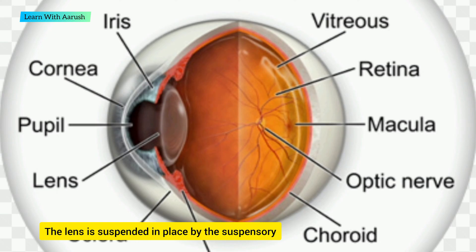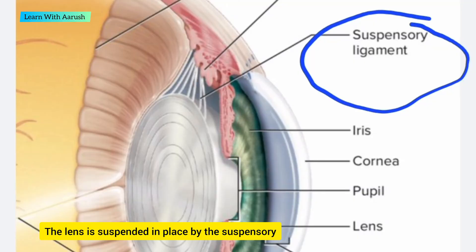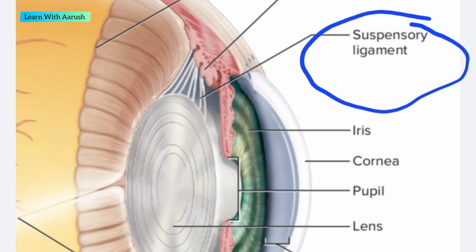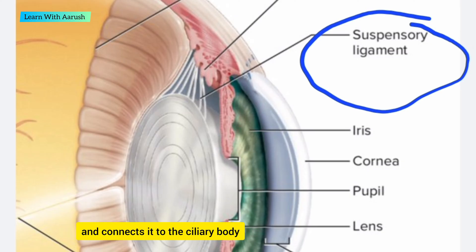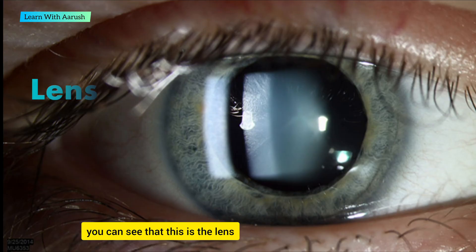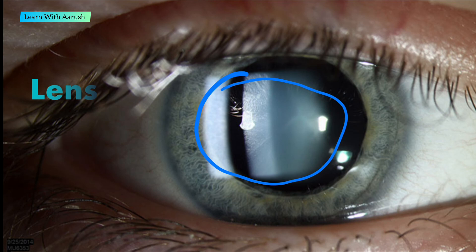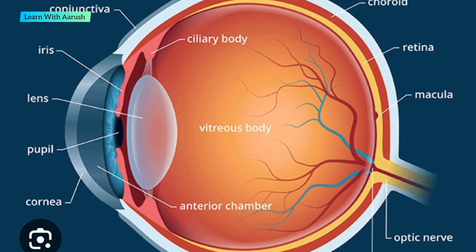The lens is suspended in place by the suspensory ligament of the lens, a ring of fibrous tissue that attaches to the lens at its equator and connects it to the ciliary body. You can see that this is the lens. It protects your eyeballs.